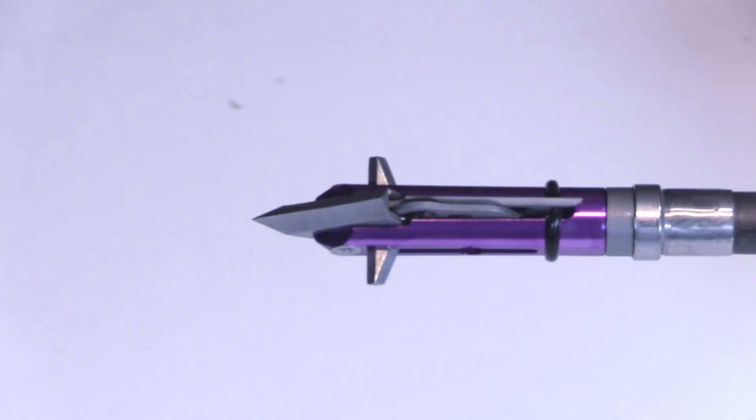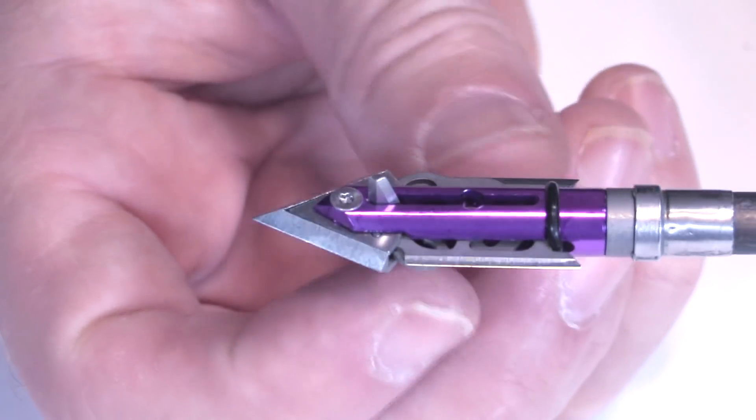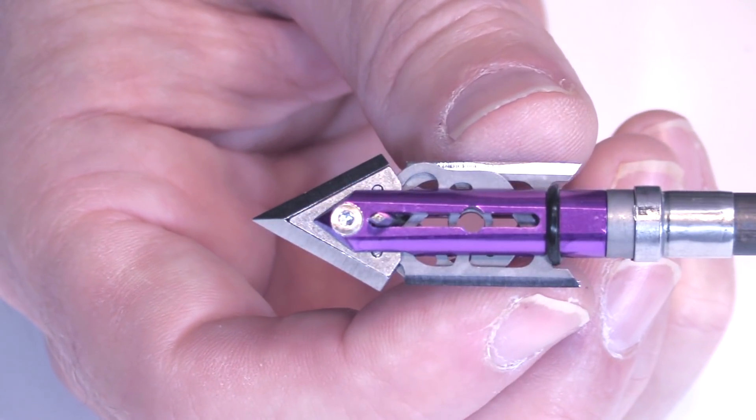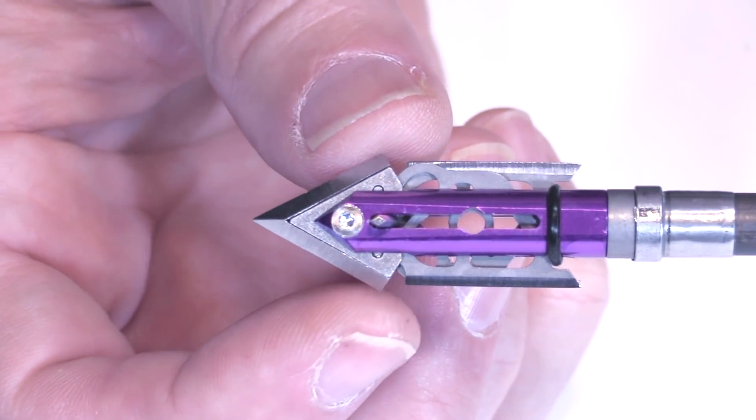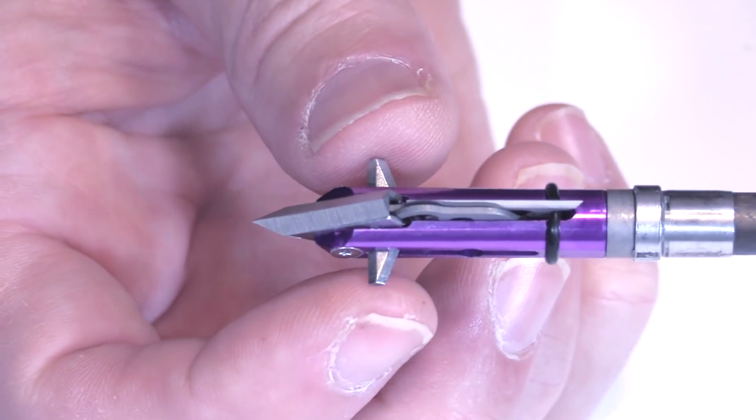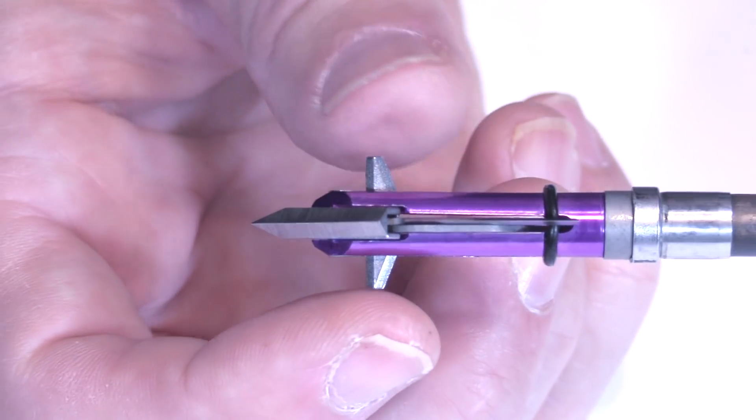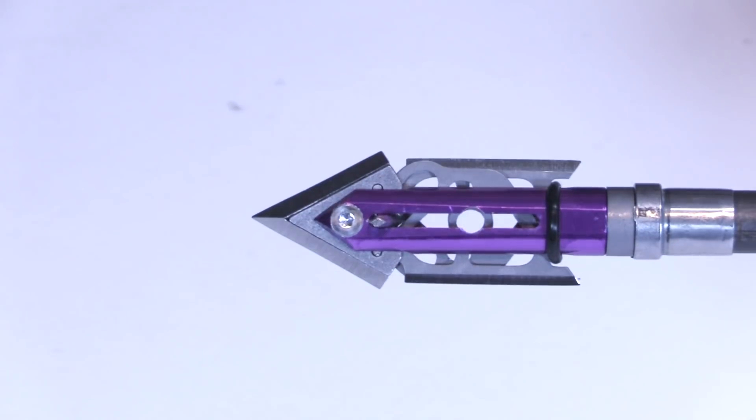So if you're not familiar with Afflictors, they're really cool design. Some of the features are in the closed position you're getting like 0.6 inches of cut in the main tip right there and then these bleeders that are the drive keys that open the blades, you're getting another half inch of cut. So you're getting over an inch of cut even in the closed position which is nice.